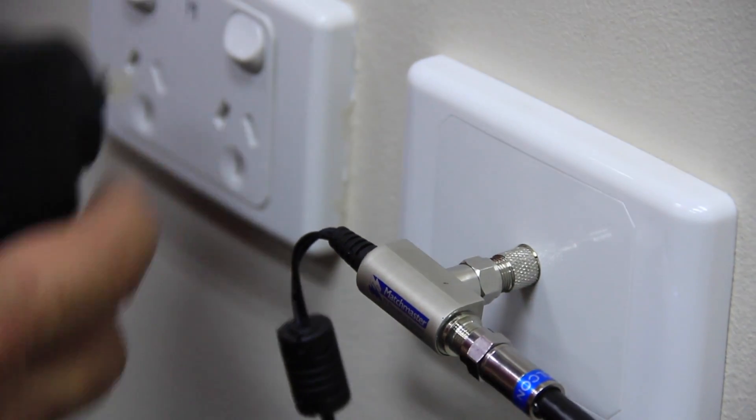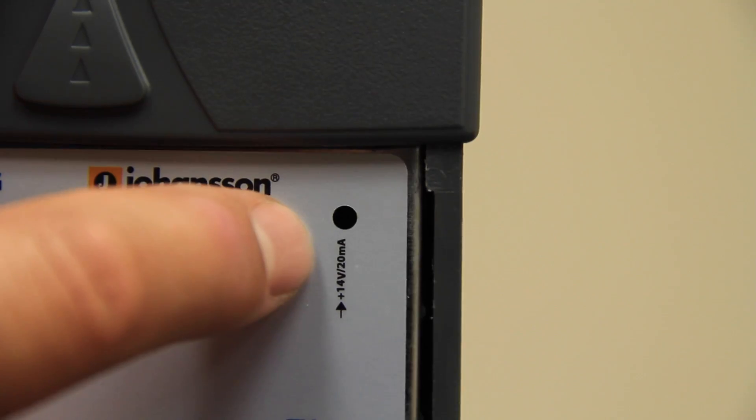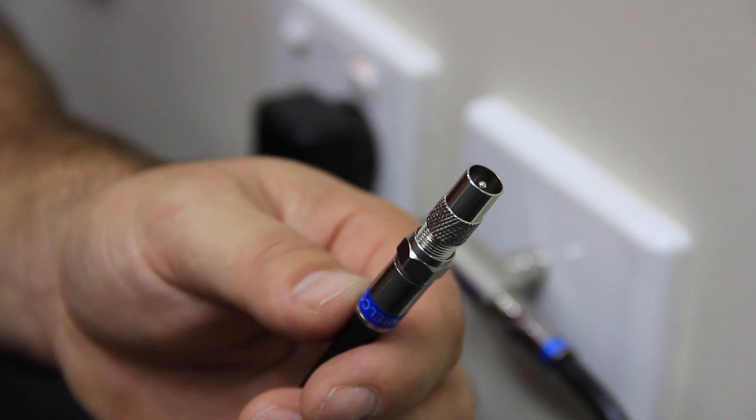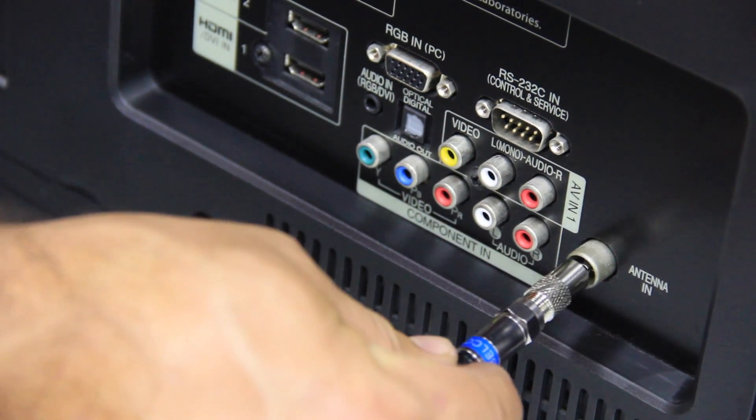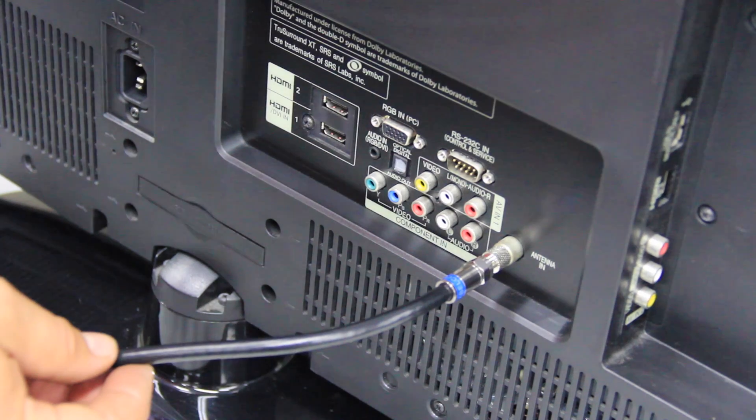The LED power indicator on the amplifier will turn on to show you when the power is on. And lastly, take the other end of the TV lead to the antenna input port of your television. You are now ready to tune your TV and enjoy your services.